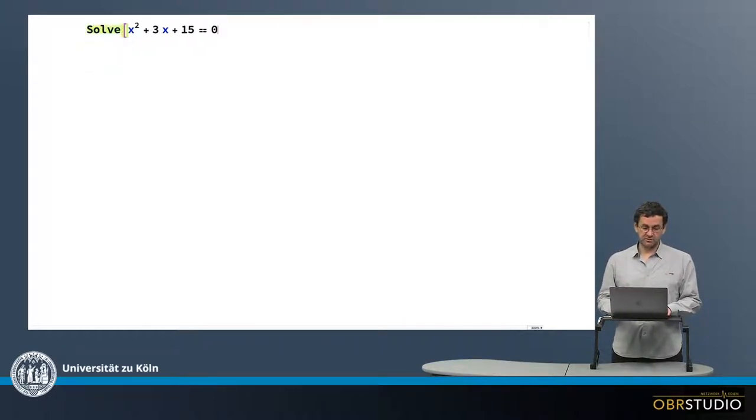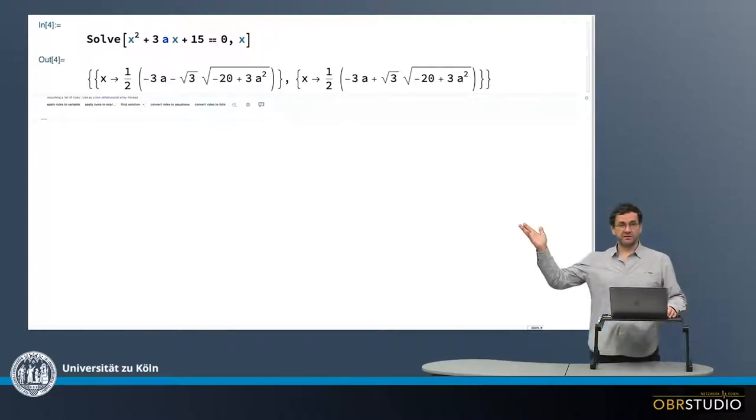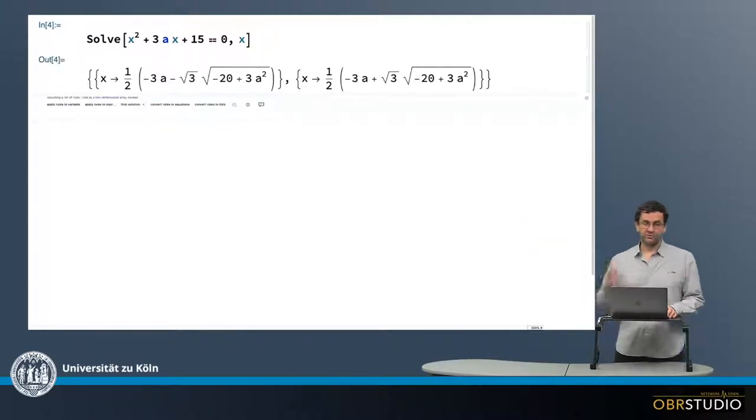For this I use the function solve. I need to define the parameter I want to solve for, which is the variable. In this case, it should be x. But it could be, for example, that there's also an a, another parameter. This is why I need to specify what parameter to solve for. So I write here x is the parameter. Then I execute it, and this is the solution for x.